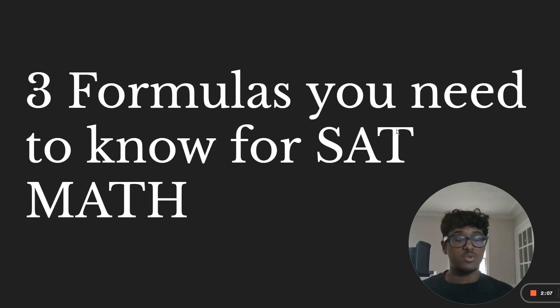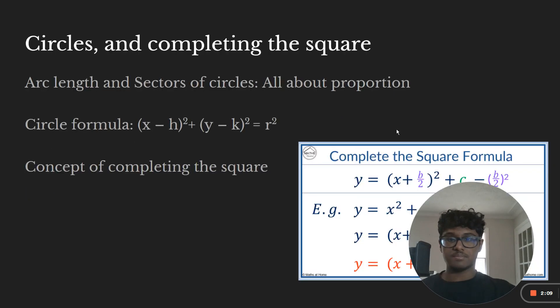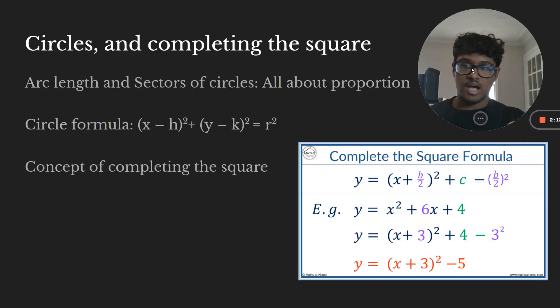Now here are three formulas that you need to know for SAT math. So first one is circles and completing the square. Now this concept seems difficult, but it's really not. Now arc length and sectors of circles, that's literally the simplest thing ever. All you want to do is calculate the proportion of the angle. What angle percent is that of the entire circle? And then either multiply that by area, if you're looking for a section or multiply that by the diameter, which is just pi times D for the arc length.